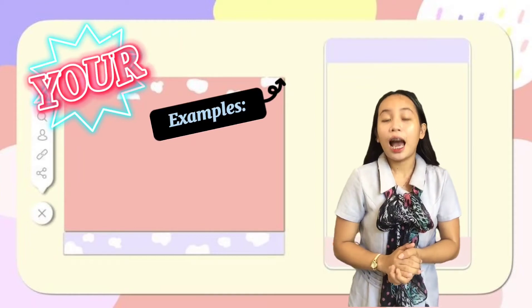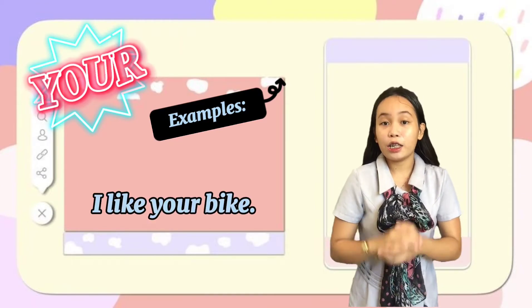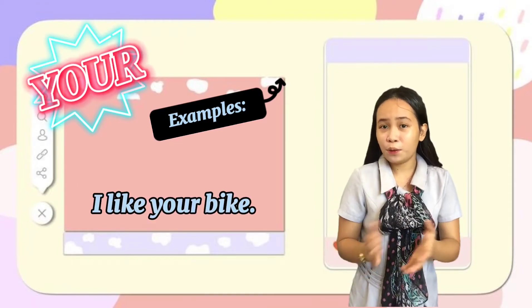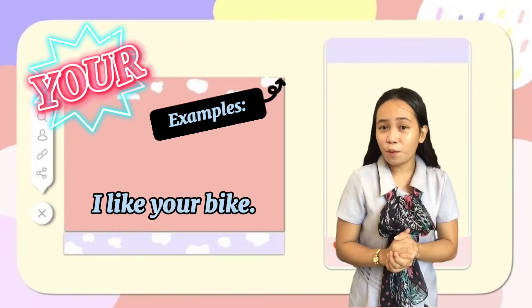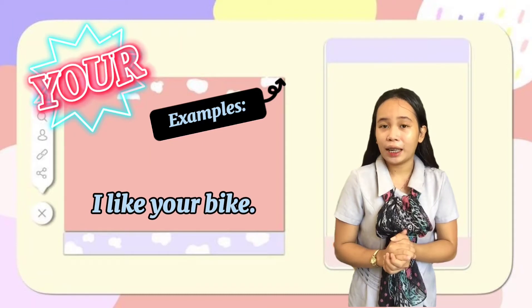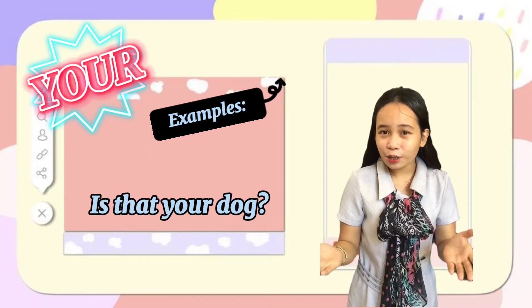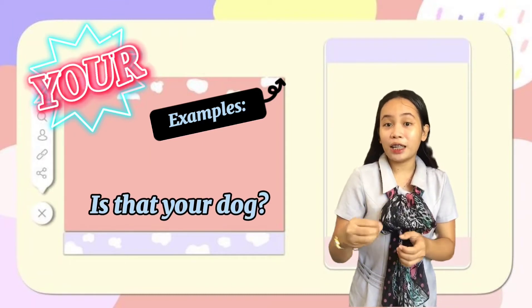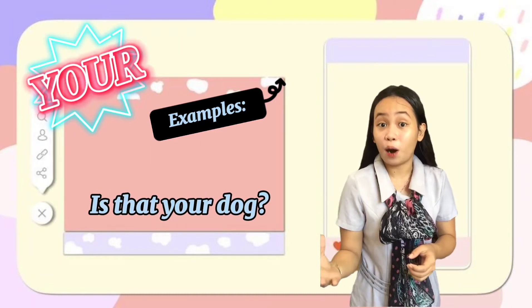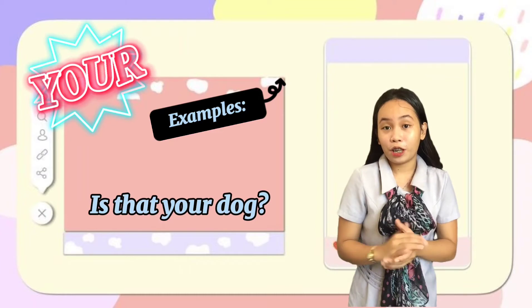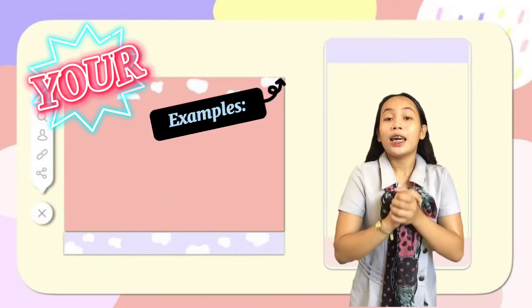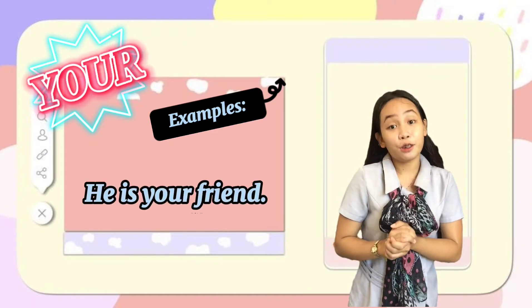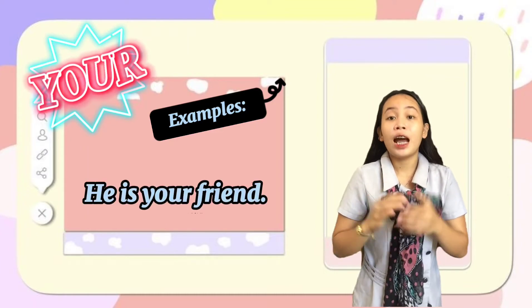First is: 'I like your bike' — you are liking someone's bike. 'Is that your dog?' — you are asking if that is someone's dog. For the third one we have: 'He is your friend.'